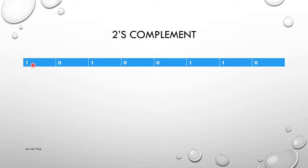If the MSB is a zero, just take it and change it to base 10 — no need to do any two's complement. But if it is a one, like in this question, then it is a negative number. If it's a negative number, I have to do a two's complement first, then only convert it to base 10. In this question I see a one, therefore I know it's a negative number, so my first step is to perform a two's complement.